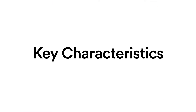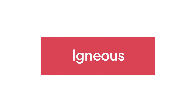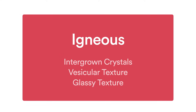We'll start by looking at some key characteristics, beginning with igneous rocks. With igneous rocks, there are really three main things to look for. They tend to have intergrown crystals, so you'll see different mineral crystals that are actually grown into and attached to one another. You might also see a vesicular texture, which simply means there are trapped air bubbles or gas pockets, and that forms when lava solidifies quickly on the surface of the earth.